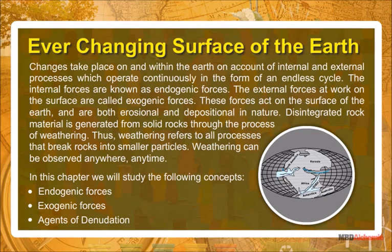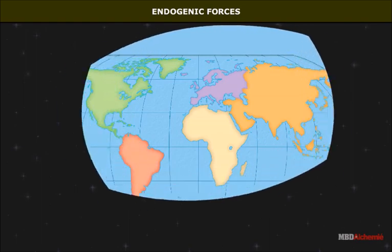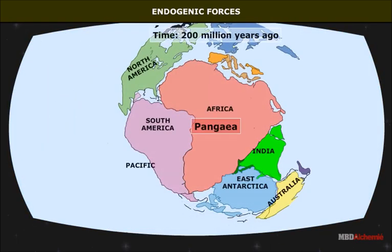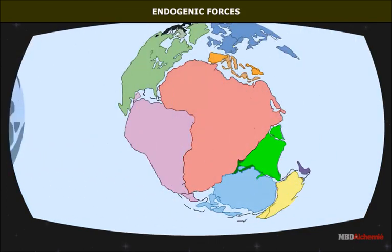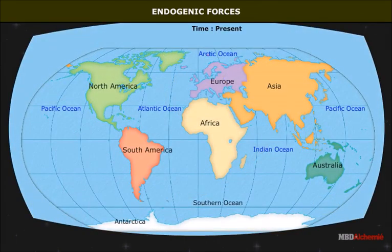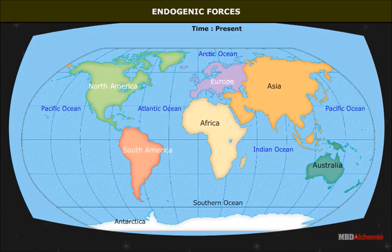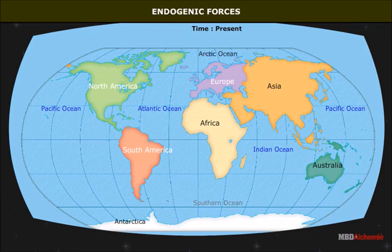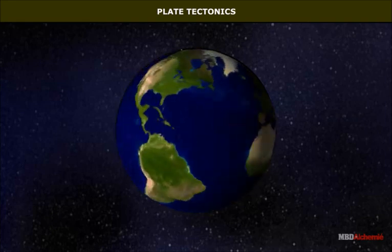The chapter covers endogenic forces, exogenic forces, and agents of denudation. There was only one continent called Pangaea. The present seven continents emerged when this single landmass split up. As a result, the oceans also got divided into five water bodies. The seven continents in order of size are Asia, Africa, North America, South America, Europe, Australia, and Antarctica. The oceans are the Pacific Ocean, the Atlantic Ocean, the Indian Ocean, the Arctic Ocean, and the Southern Ocean.